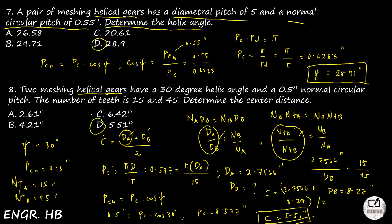That covers part 1 of gears — spur and helical. The remaining topics are worm and bevel gears, which are slightly more complex, though spur and helical are more commonly tested on the board exam. We still have two more Machine Design videos coming up: bearings, and rivets and welds (which I may combine since those are rarely tested). Thank you for watching — I hope this helped with your review. God bless, guys. Bye!